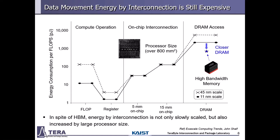This graph shows energy consumption of each component per floating point operation. The first part is the computing operation, and the second and third parts are on-chip interconnect and DRAM energy. As transistors scale down, compute energy is rapidly decreased, but on-chip interconnect and DRAM energy is only slowly reduced. In other words, data movement consumes more energy than compute operations. Although HBM has dramatically reduced energy consumption by placing DRAM closer to the processor, as the processor size continuously increases, data movement energy limits performance scaling.